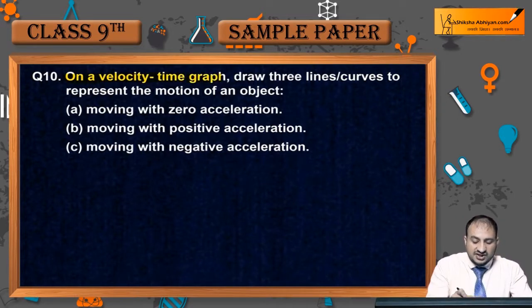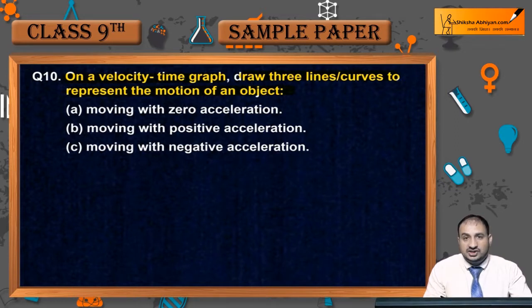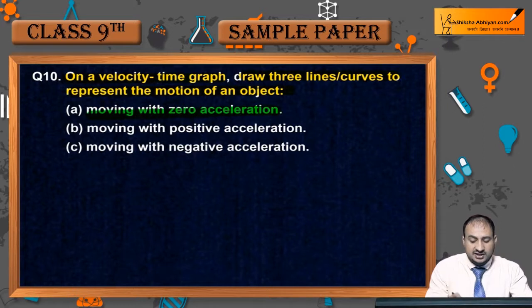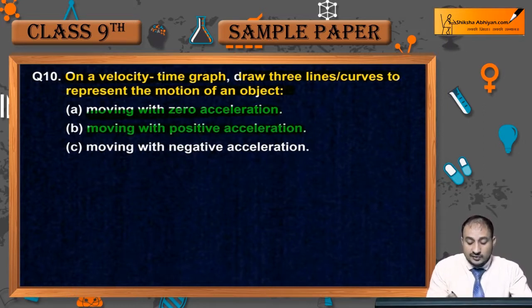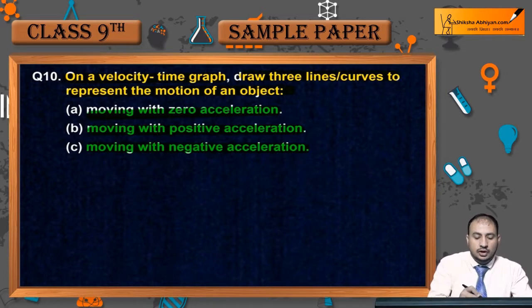On a velocity-time graph, draw three lines or curves to represent the motion of an object. आपको यहाँ पर velocity-time graph बनाना है और उस पर curve या lines से show करना है। First is moving with zero acceleration, second is moving with positive acceleration, और third is moving with negative acceleration के साथ।